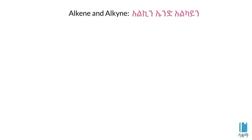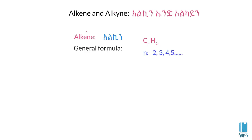This is the Alkene. The Alkene general formula is CnH2N. This carbon is called Alkene.